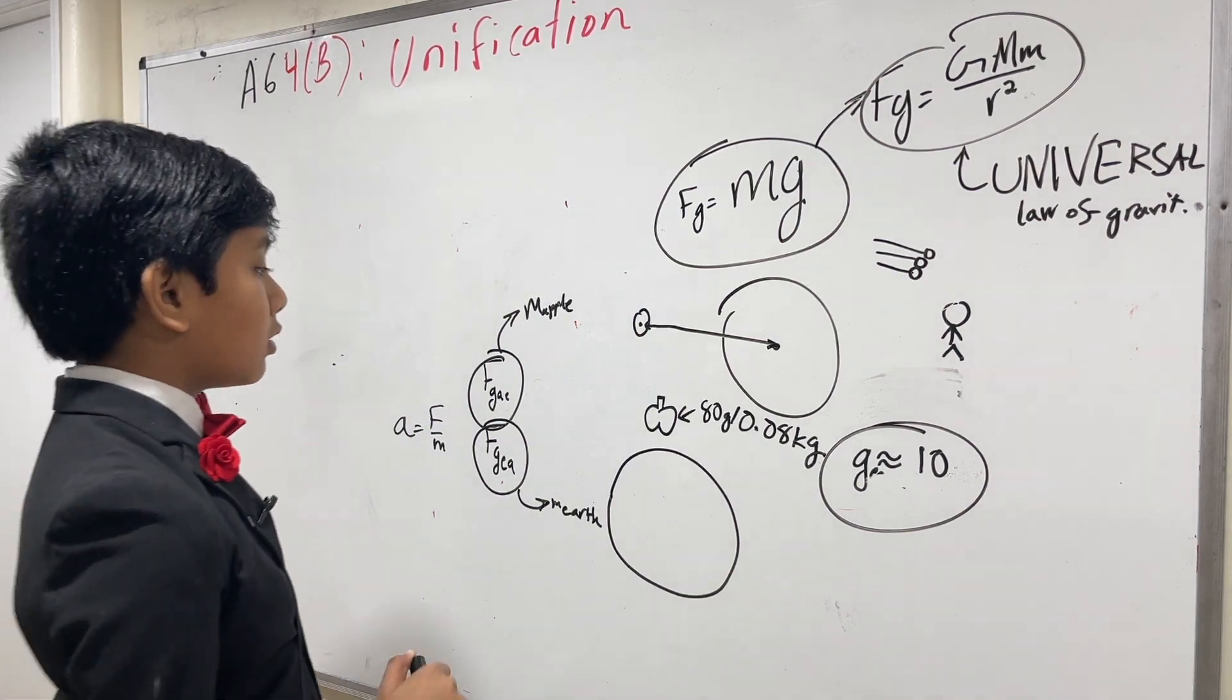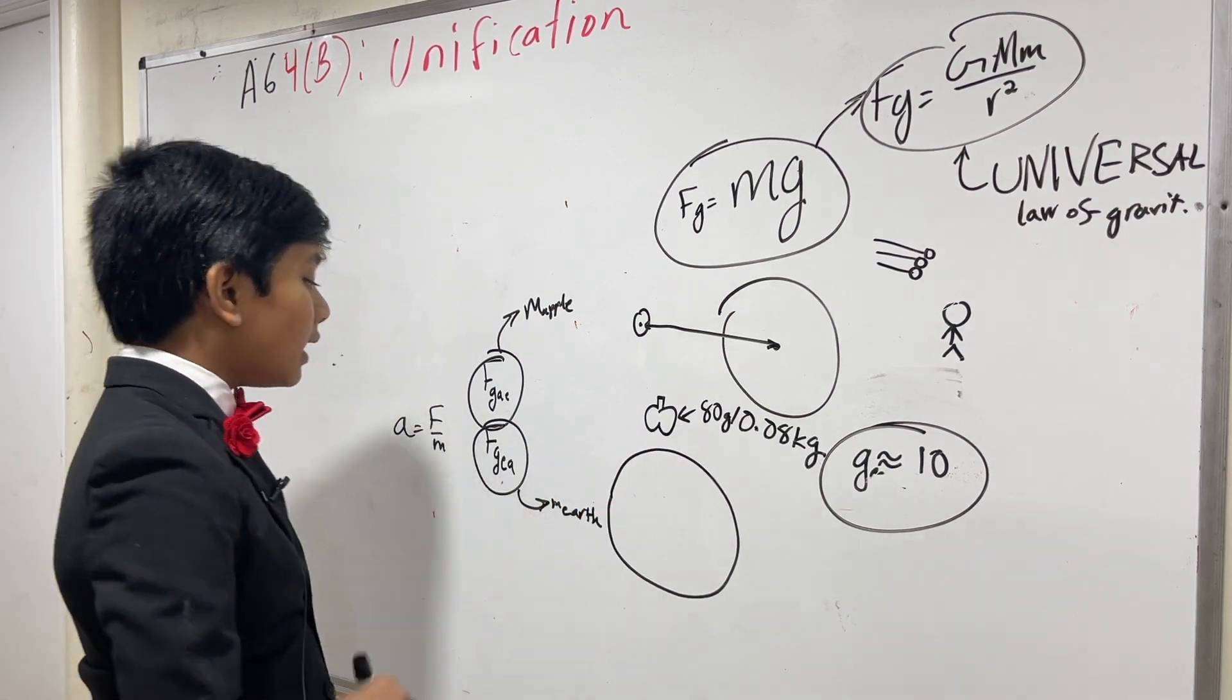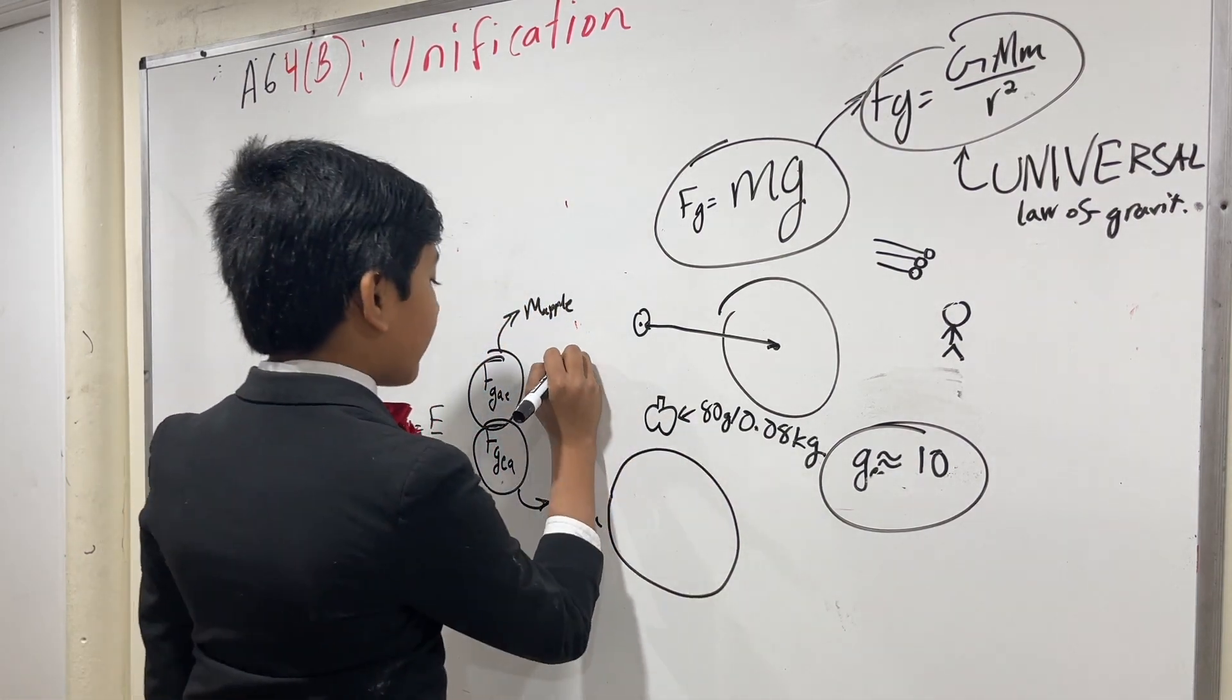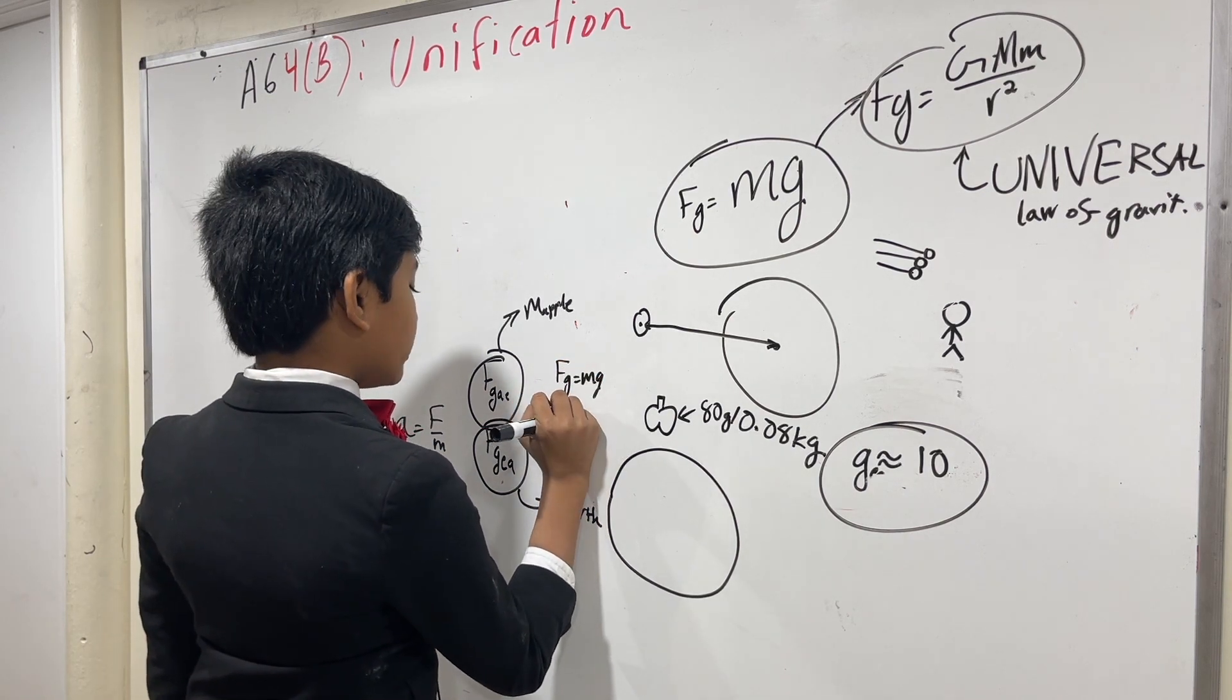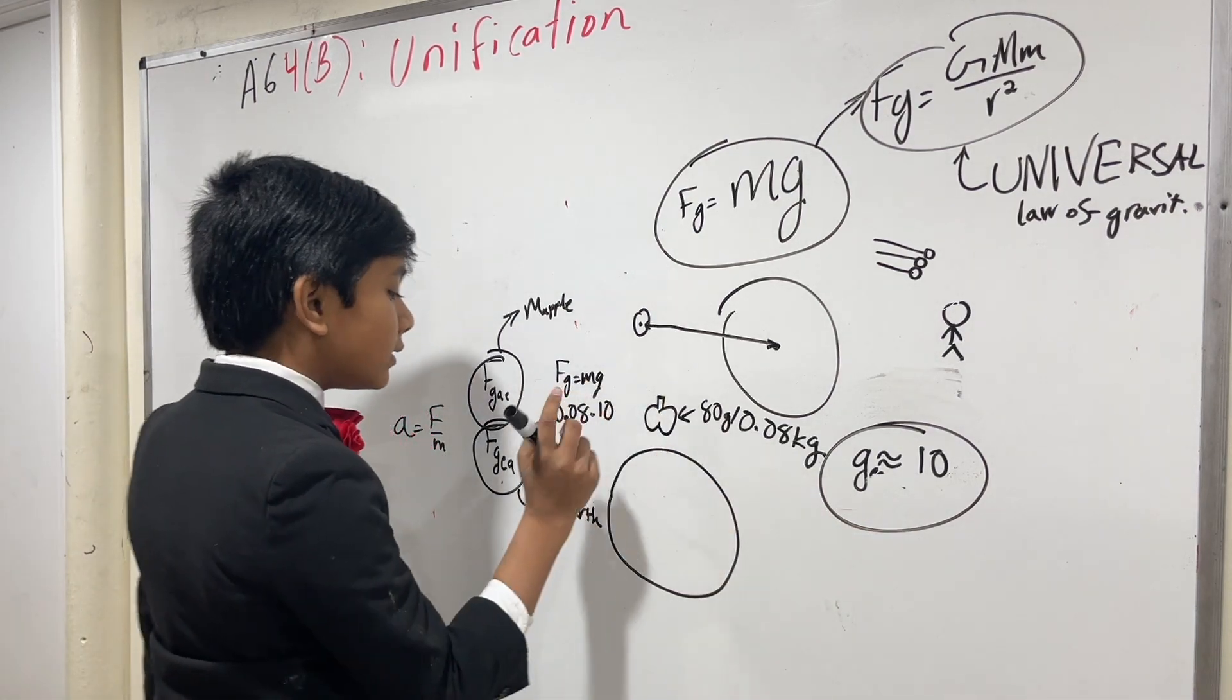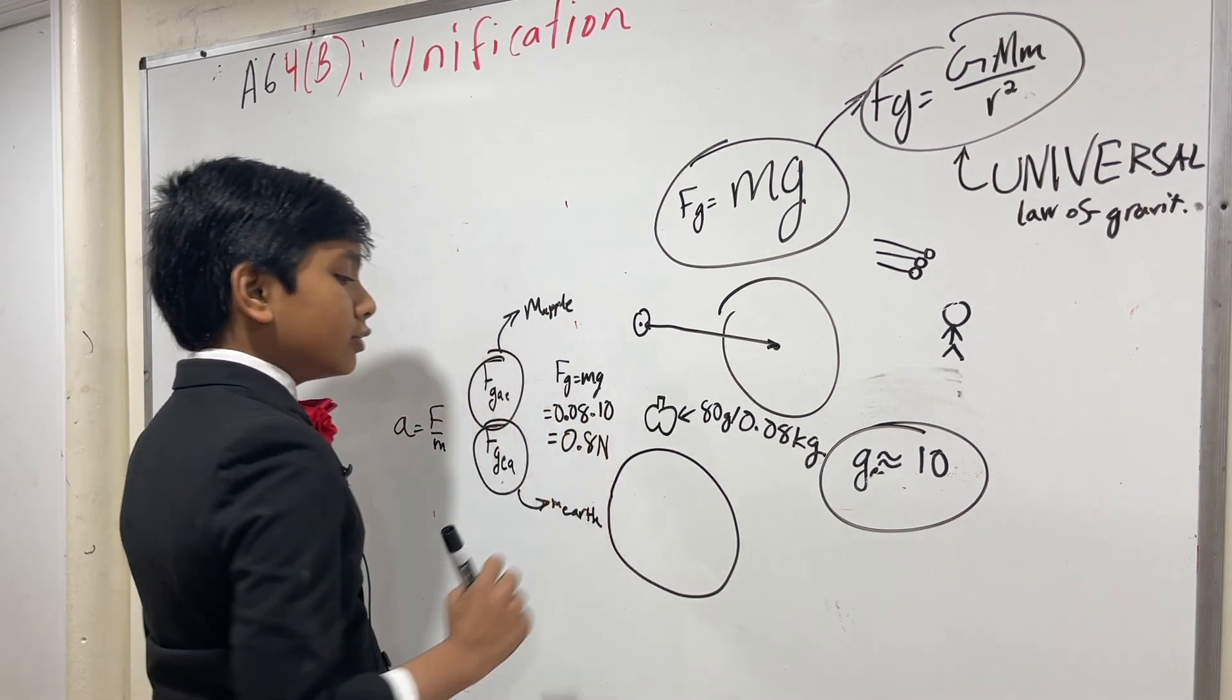Alright, enough blibber-blabber. What is the force of the apple on the Earth? Well, to find that, we have to find the force of the Earth on the apple. Which would be Fg is mg. So that's 0.08 kilograms times g is approximately 10. So that gives us 0.8 newtons.